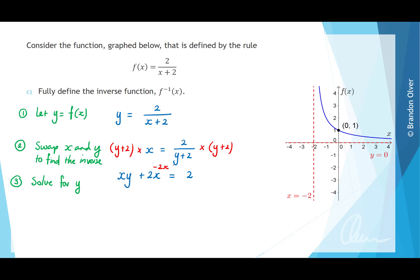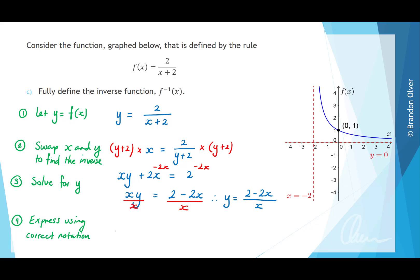We subtract 2x from both sides, giving x y equals 2 minus 2x. Then we divide both sides by x, finding y equals 2 minus 2x, all divided by x. Step 4 is to express using correct notation, so we write f inverse of x equals the rule. This simplifies to 2 divided by x minus 2. The other half of fully defining the inverse is to state the domain, which equals the range of the original function.